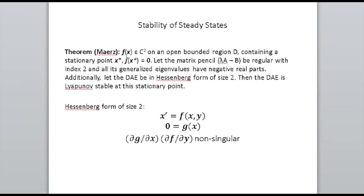Meriz, based in Berlin, has written a very good theorem which goes beyond Hessenberg form systems. For our purposes, if the system is in Hessenberg form, what it says is you can use the matrix pencil to define stability at the stationary points. This is very similar to what you do with an ODE — if your eigenvalues are negative at the stationary point you can say you have a stable solution, otherwise unstable. Instead of looking at eigenvalues you look at generalized eigenvalues, where the B matrix identifies which equations are differential equations and which are algebraic constraints.